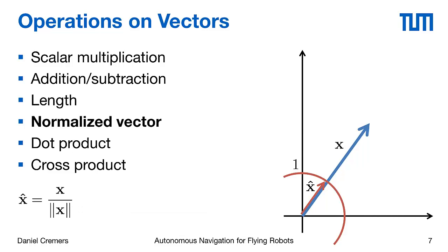Furthermore, we can define normalized vectors, which for a vector x, for example, the normalized version x hat is obtained by dividing that vector by its length. What we obtain then is a unit vector, so a vector of length 1 that has the same direction as x.